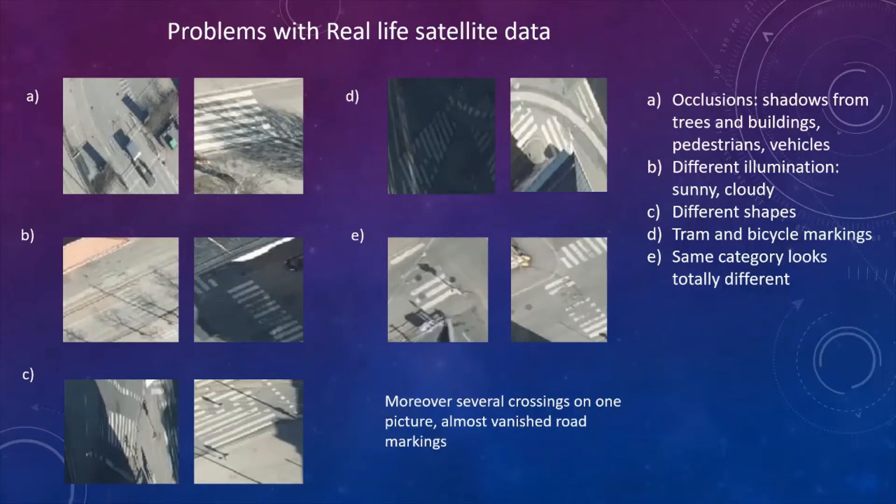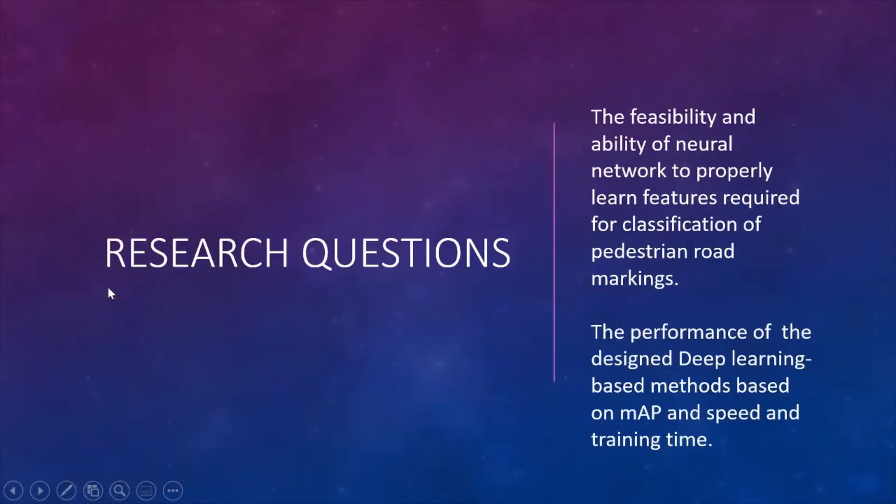Moreover, there were such cases that on one image there were several crossings, and sometimes some road markings were almost vanished, as you can see here. So my research question is the feasibility and ability of neural network to properly learn features, which are required for classification of pedestrian road markings, and to assess the performance of the designed deep learning based method based on average precision and speed, and also to assess the training time.